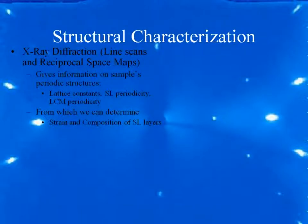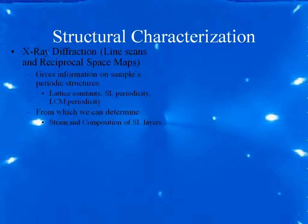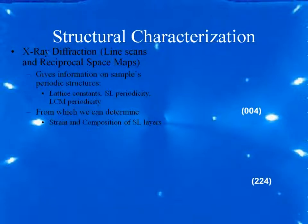For x-ray diffraction we looked at both line scans and reciprocal space maps. This gives us information about the superlattice periodicity — the AB periodicity — as well as the lateral composition modulation periodicity and the lattice constant for each superlattice layer. This information can be used to determine the strain of each layer. The background of my slides is a picture of the Bragg reflections showing the on-axis 004 peak and the off-axis 224 peak. We did reflections about both of those peaks to determine what was going on in the sample.